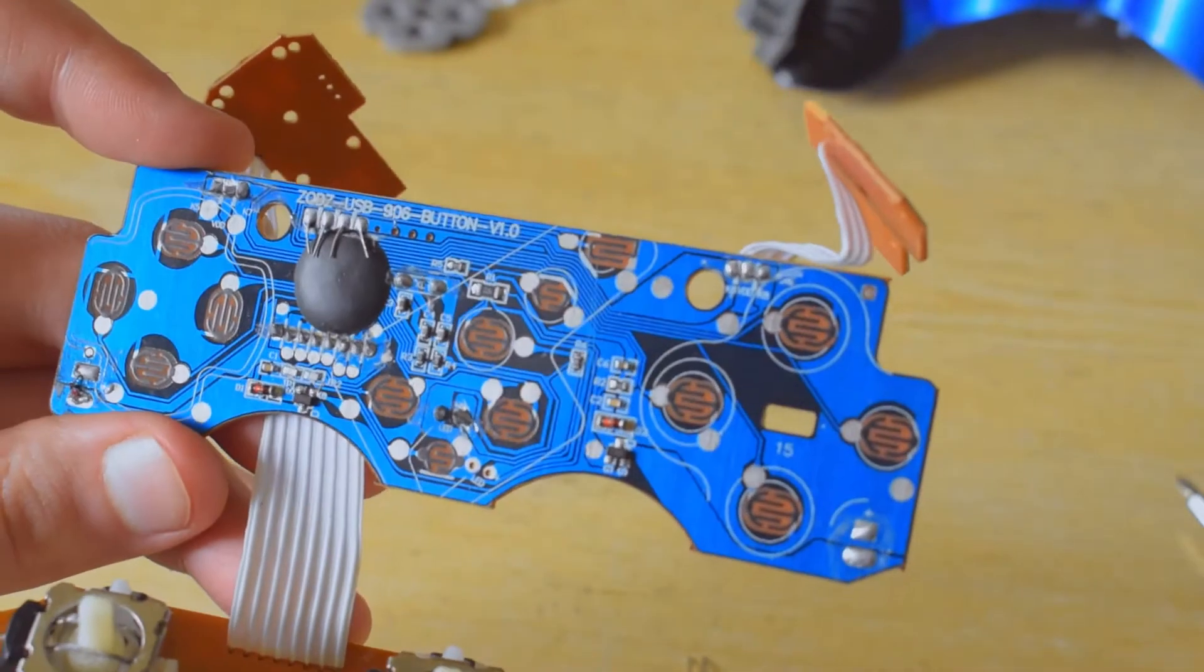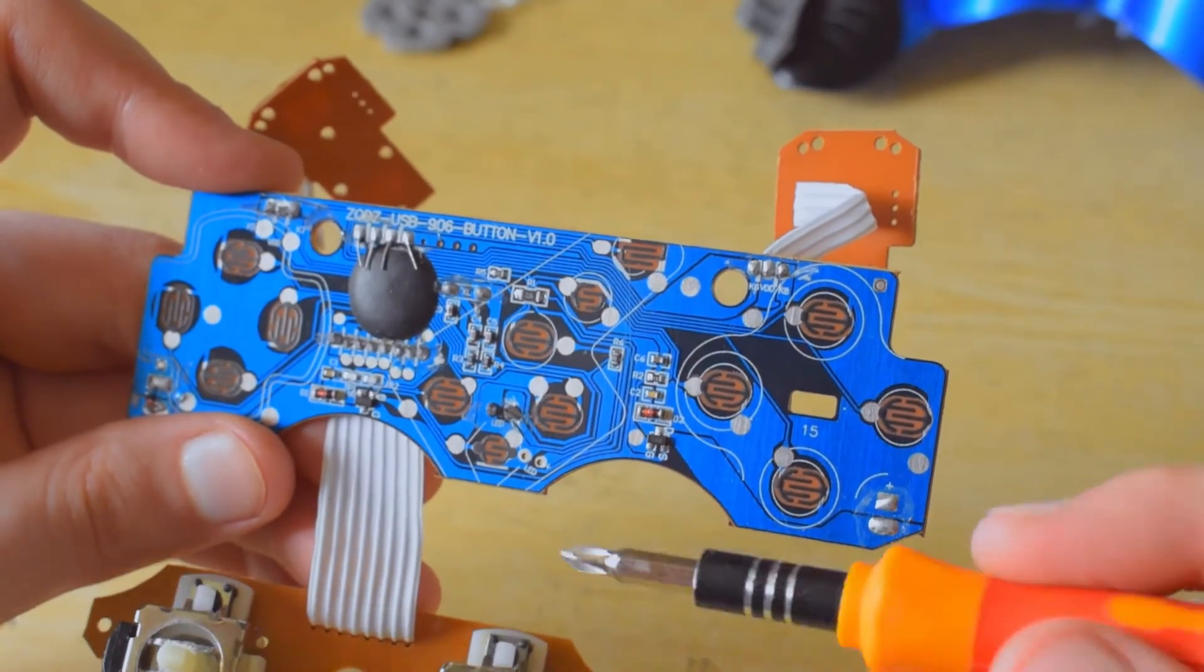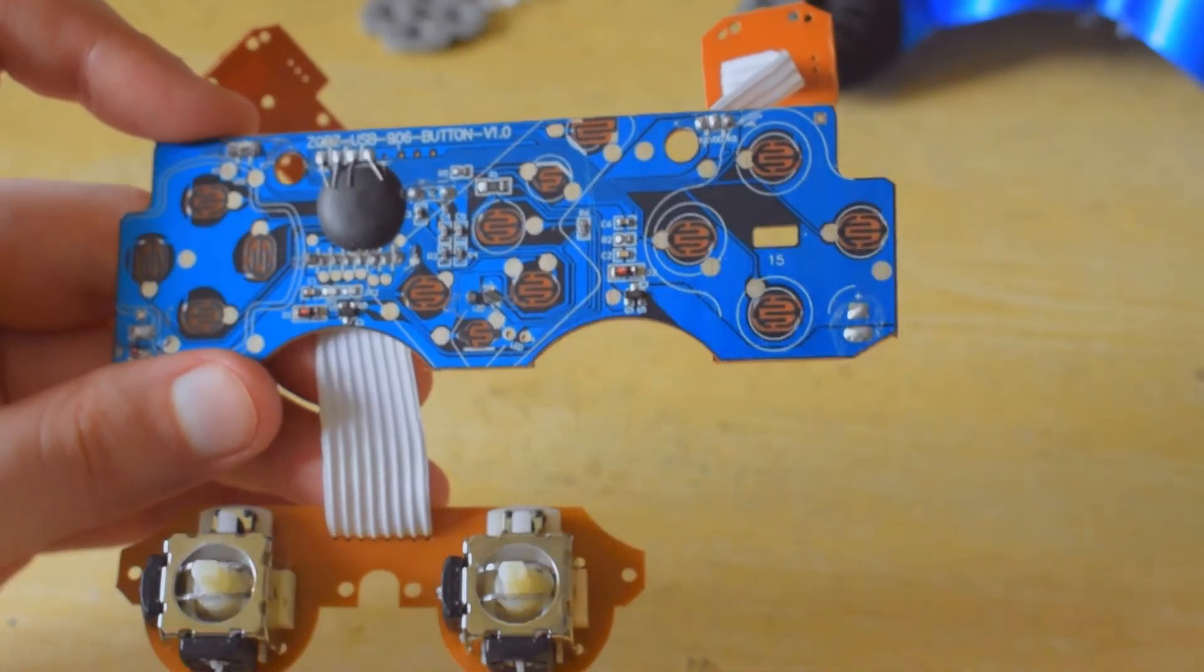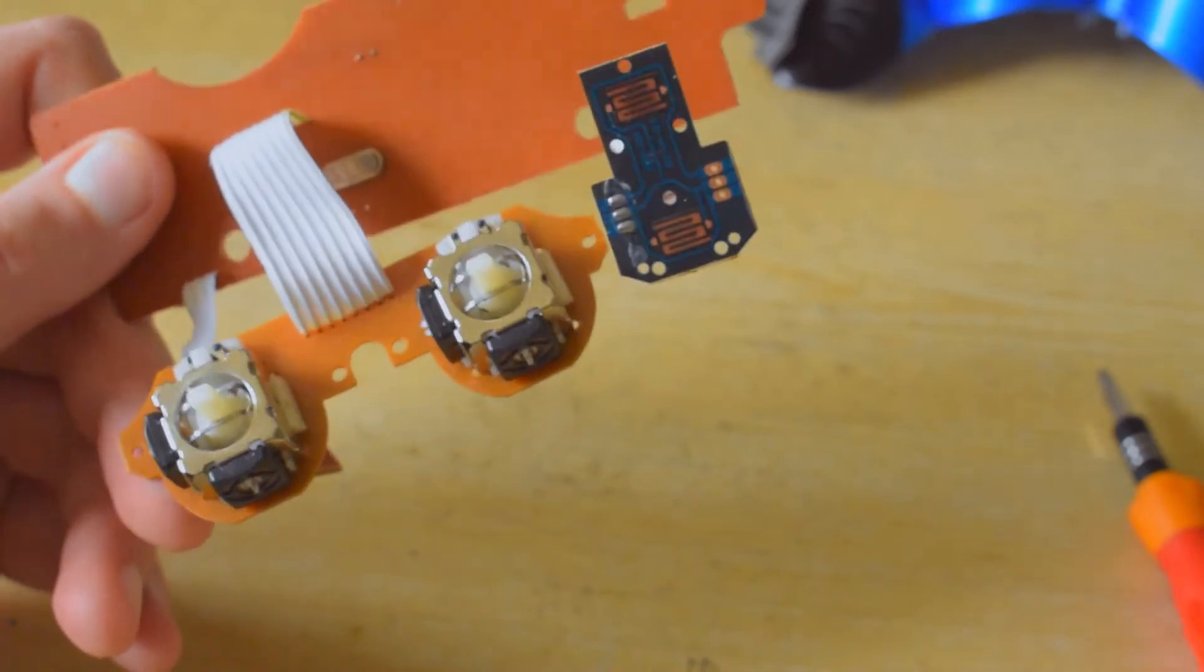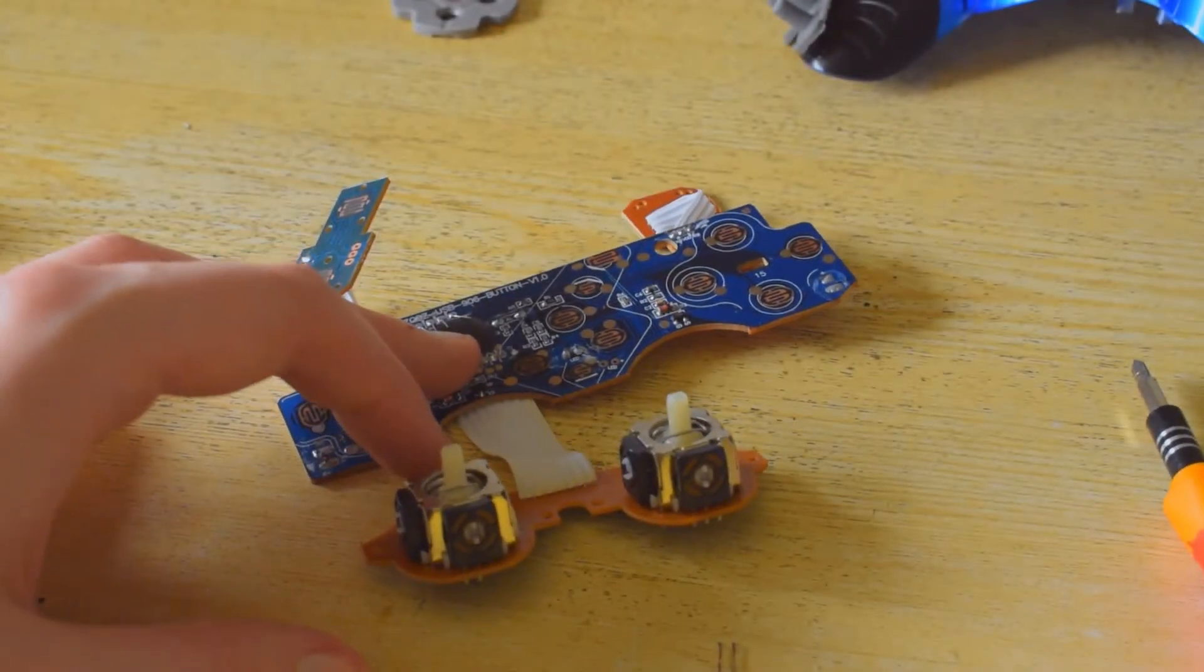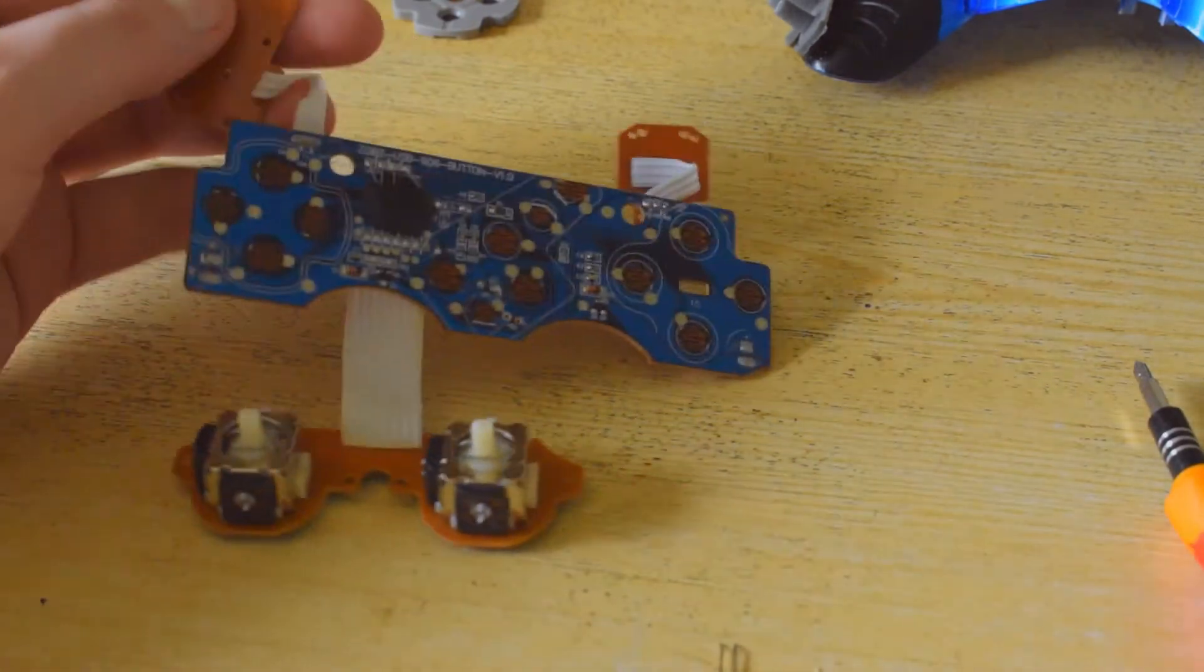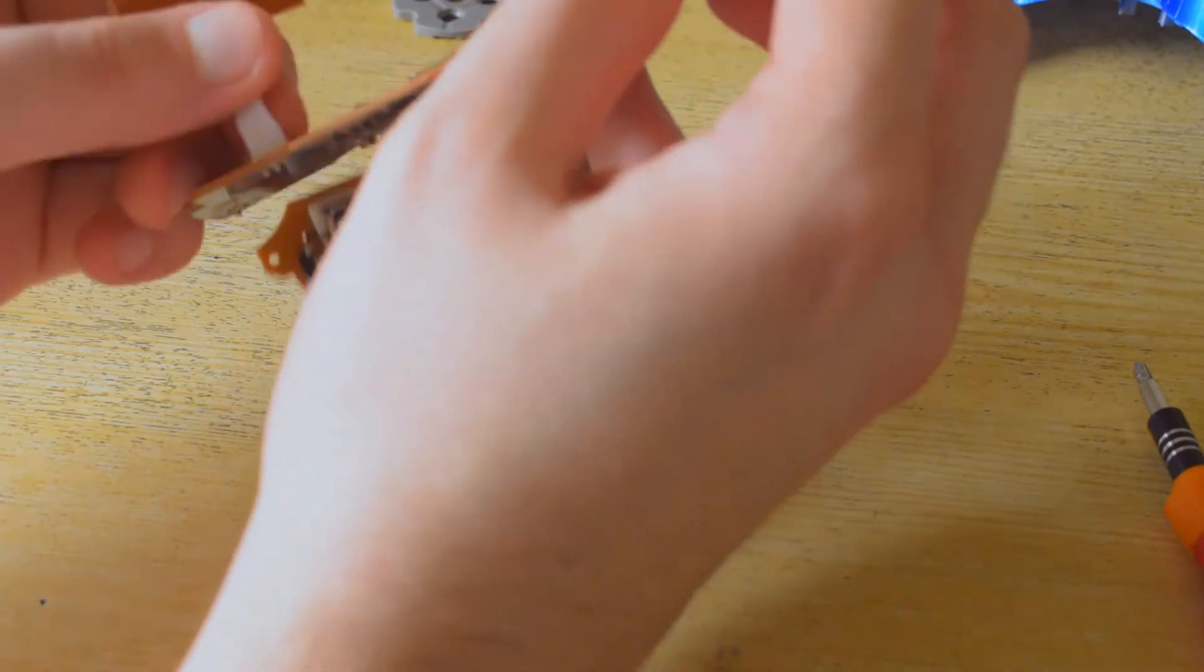You can barely see anything on it. The board itself is not dead, it's just the analog stick. I could replace the analog stick and play with it again, but the analog stick would cost me about three or four bucks and the entire controller itself cost eight bucks, so I don't think it's really worth it. But I'm going to keep this board for fun.